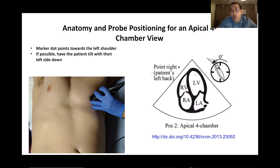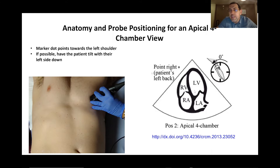What are we looking at? We'll be looking at the left ventricle on the right side of the screen, and the left atrium separated by the mitral valve. On the left side of the screen we'll see the right ventricle separated by the tricuspid valve, and the right atrium. We should see that the left ventricle is bigger than the right ventricle — the right ventricle is usually about 60% the size of the left, and the two atria are about the same size.